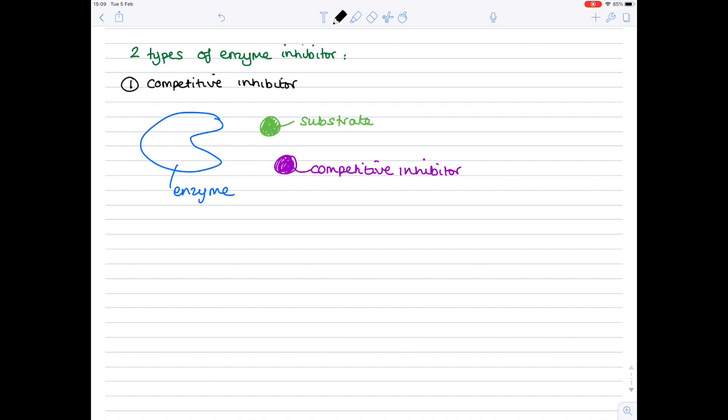And obviously if the correct substrate is no longer binding, then you can have no enzyme activity. So let's make a first note by saying that the competitive inhibitor is similar to the substrate molecule and binds with the enzyme's active site, therefore preventing access by the substrate molecules.